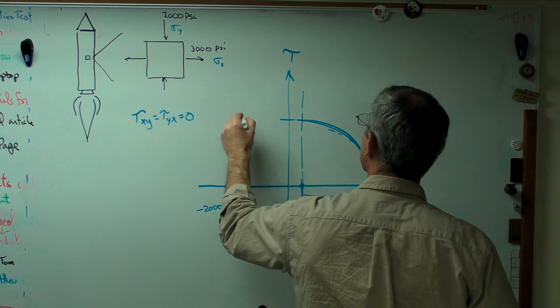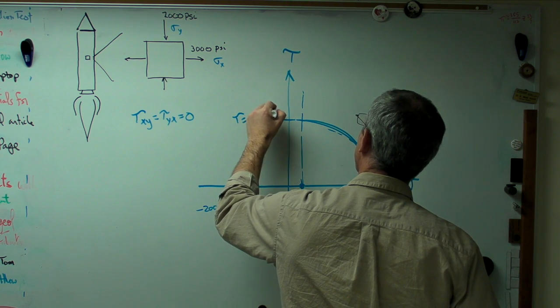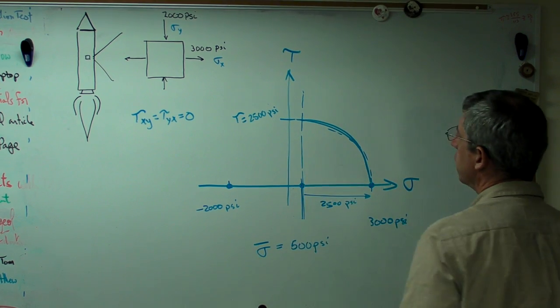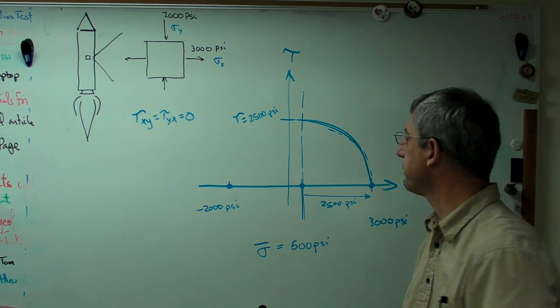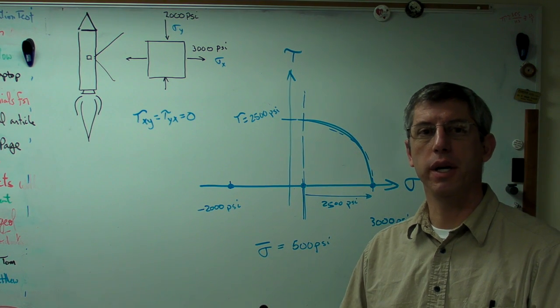All right. Right there, it's tau equals 2,500 psi. Because all I did was rotate the radius vertical. So the maximum shear stress is 2,500 psi.